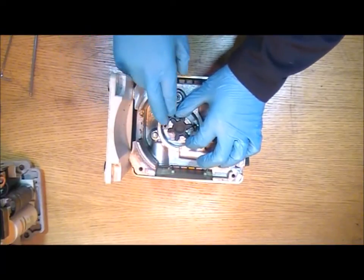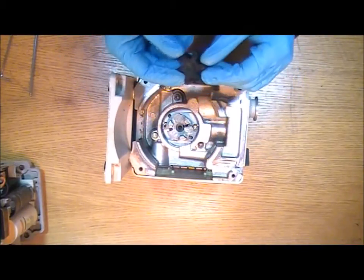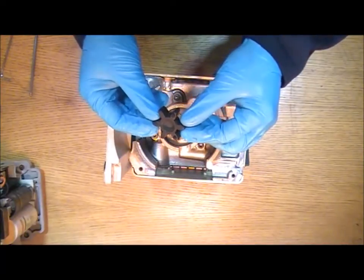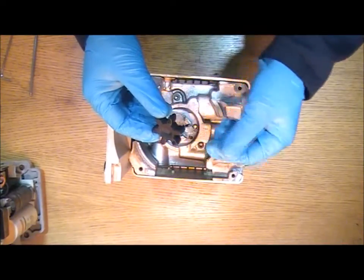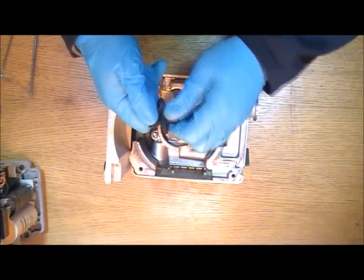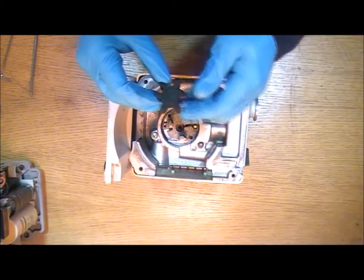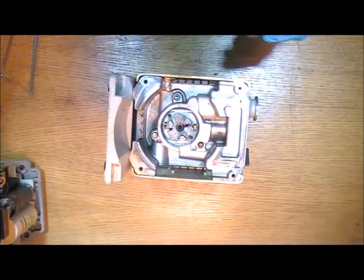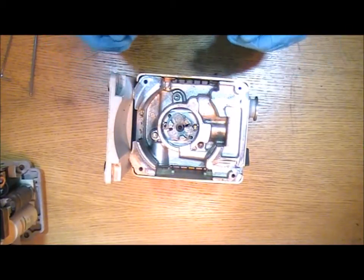And then in the centre here is the coupling. This is a rubber part that connects between the motor and the pump and it's elastic. So you want to make sure that that's still soft otherwise it will crack up. If it is hardened off then you need to replace that.